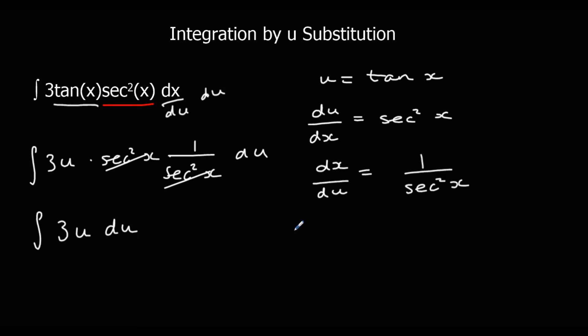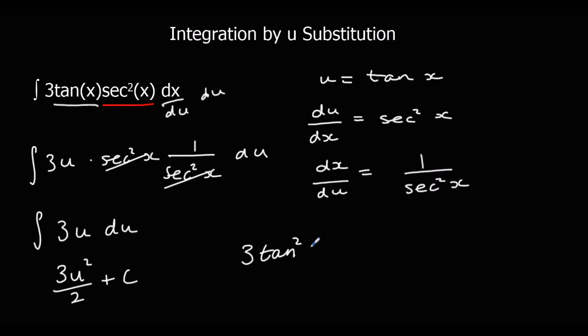So we add 1 to the power, divide by the new power, and plus c. All that's left to do is substitute tan x back in for u, which gives us 3 tan squared x over 2 plus c.